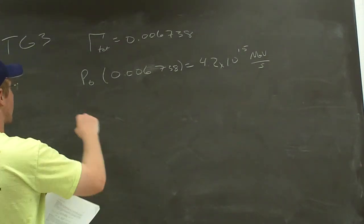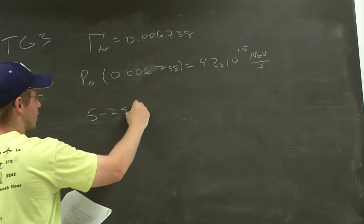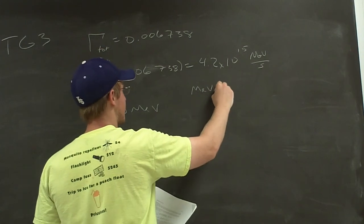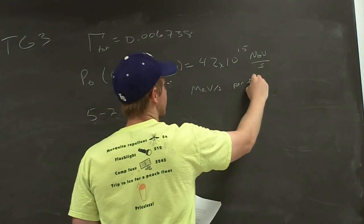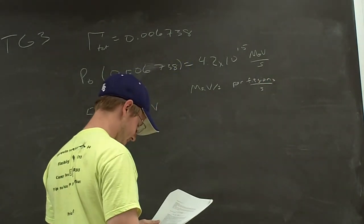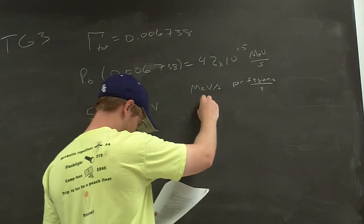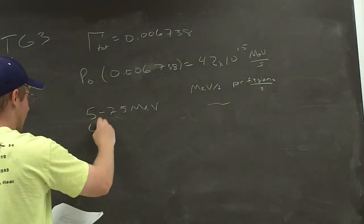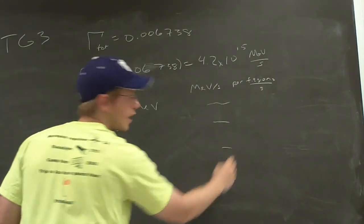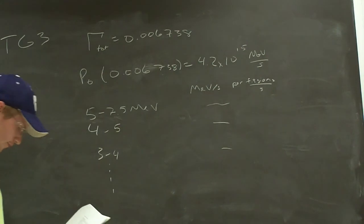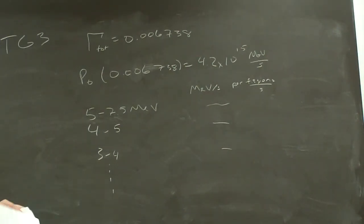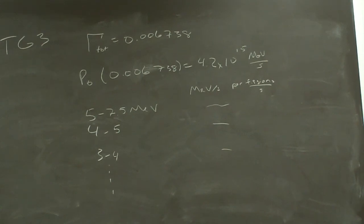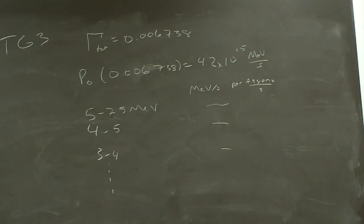What the program does is it tells you that from 5 to 7.5 MeV, your MeV per second per fission per second, basically your MeV per second, and it gives you a number. Then it has different bins: 4 to 5, 3 to 4, and so on. You can do a similar thing using table G3 in the appendix. I did mine in Excel and found that my emission was 4.9 times 10 to the 15.